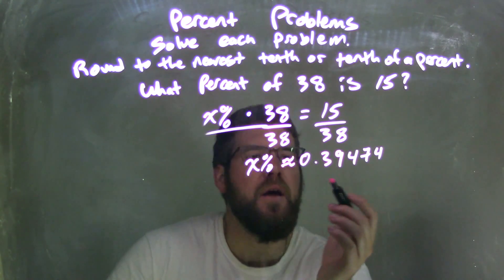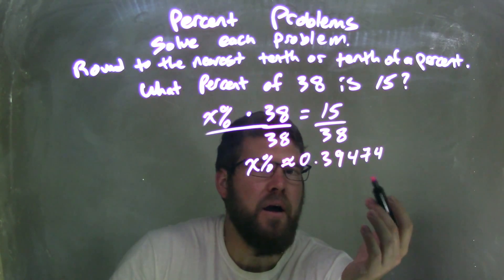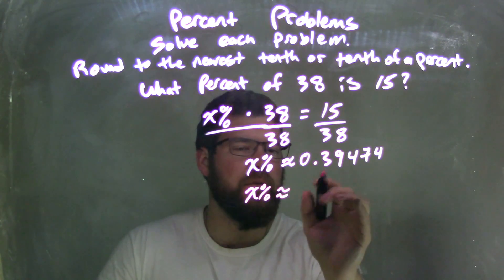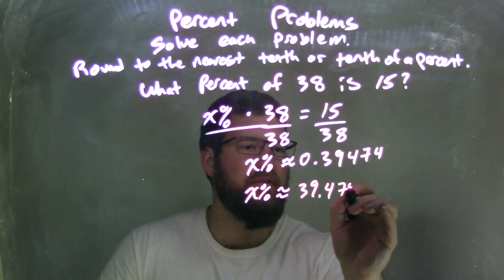I need to convert that to a percent. So to do that, I'm going to multiply that by 100, move the decimal place two points over to the right. So we have an x percent. It's approximately equal to, well, here, 39.474%.